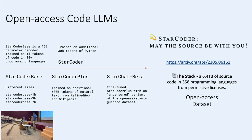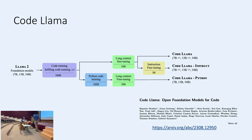Up until August, StarChat was the state-of-the-art open model. But in August, Meta released CodeLlama, which as of today is the state-of-the-art open model. If you look at their pipeline, it's very similar: they started with Llama 2 trained on natural language text, added additional code-related training, then Python training. The unique thing about CodeLlama is that they do long-context fine-tuning, allowing you to extend the context to up to 100K tokens. Then finally, they did instruction fine-tuning to create three sets of models.